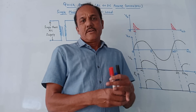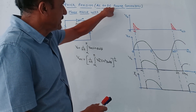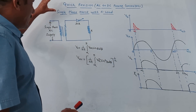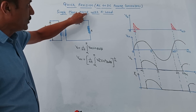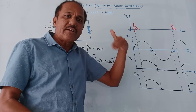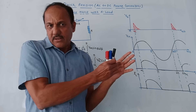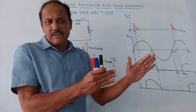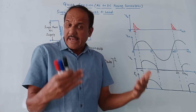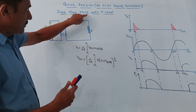Hello and welcome, dear students. This session is for quick revision of AC to DC power converters for the subject Power Devices and Circuits. The first part covers the single phase half wave controlled rectifier (HWCR) with R load. I will be telling you certain tricks on how to remember the waveforms and related diagrams, because there are a lot of waveforms and circuit diagrams.